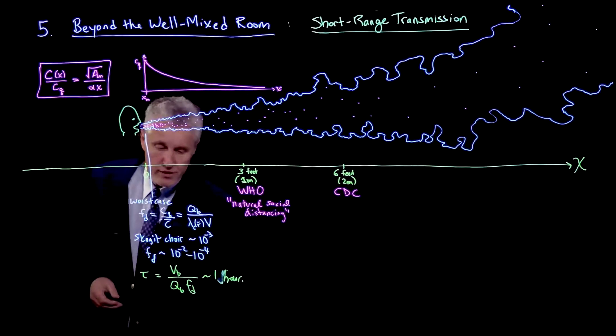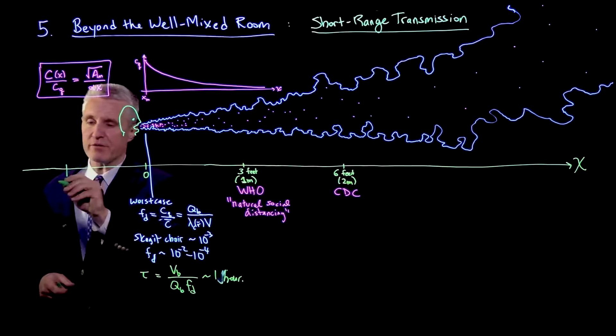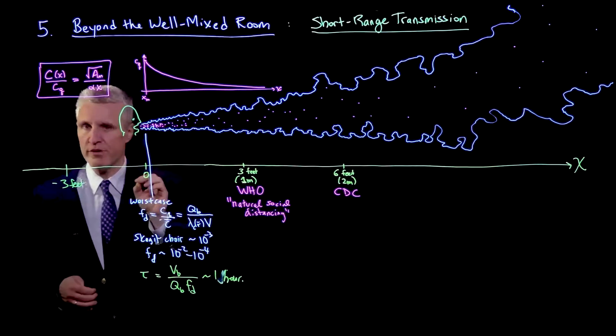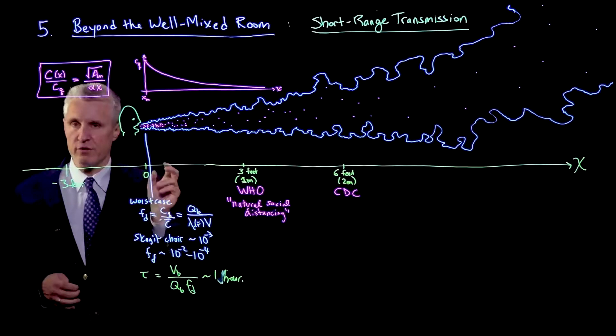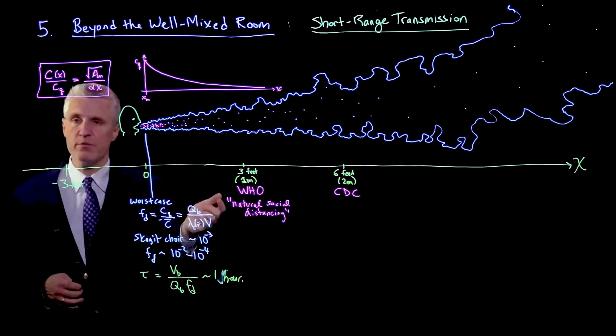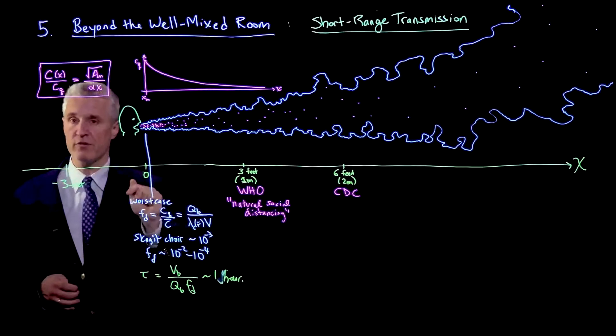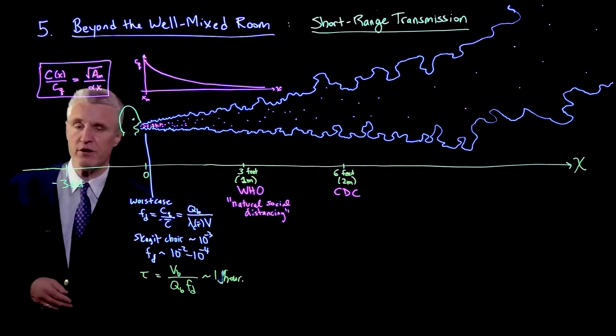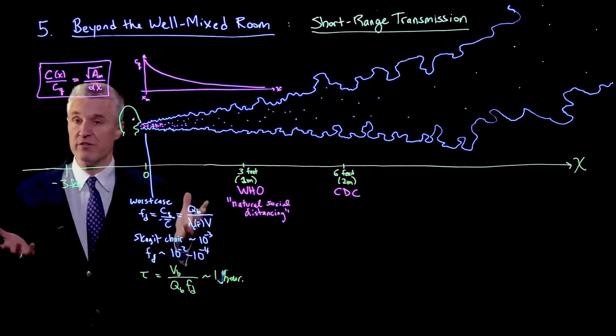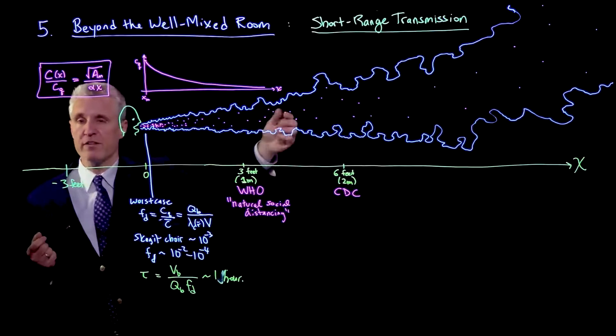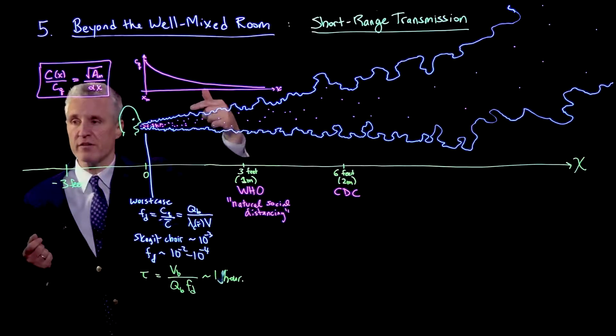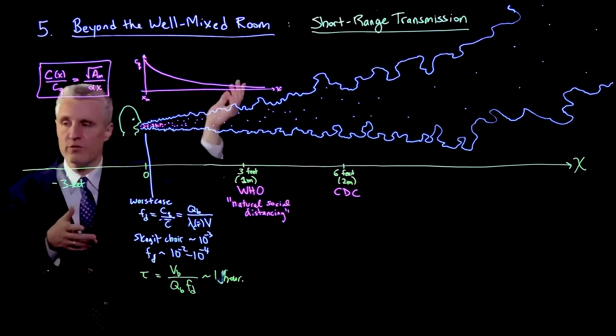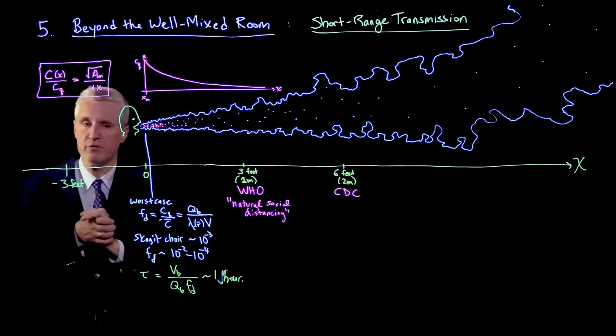It's worth noting we can also look at a negative value, like minus 3 feet. Respiratory jets do not only increase your risk relative to the well-mixed ambient. There must be regions where the risk is actually lower, because the well-mixed solution was obtained by mass balance. If there's a higher concentration in front, there must be a lower concentration somewhere else, perhaps behind somebody at a reasonable distance.